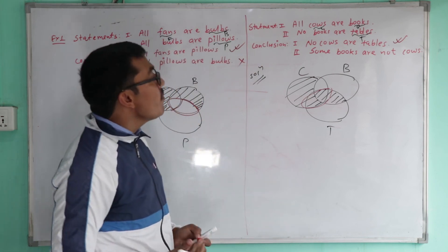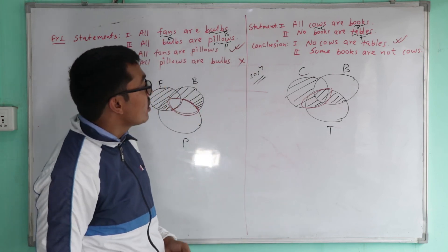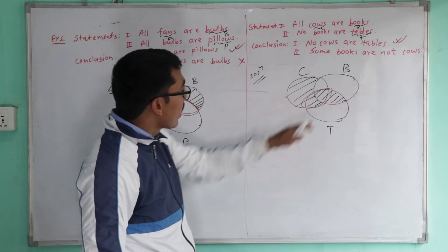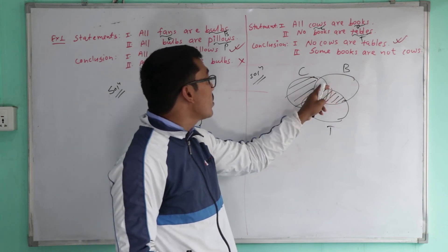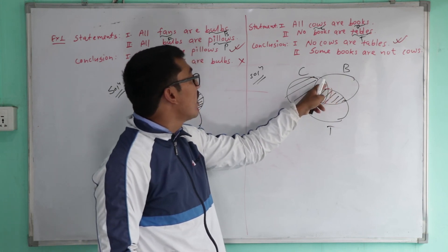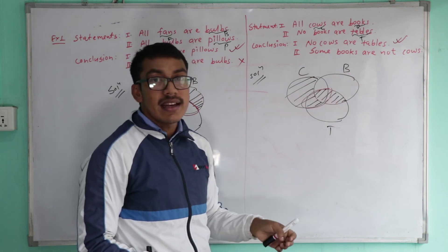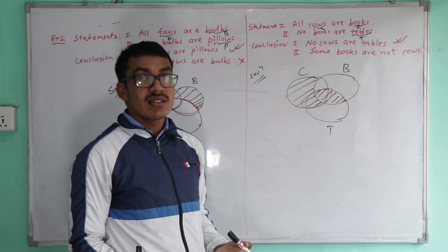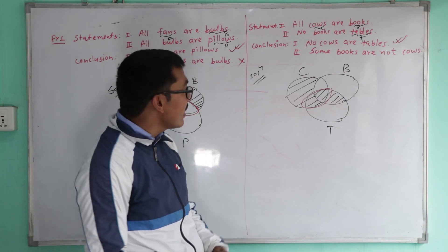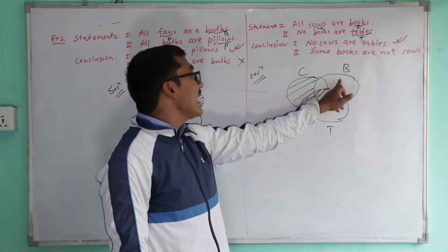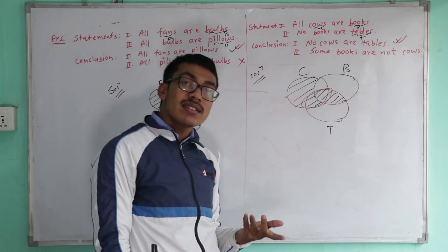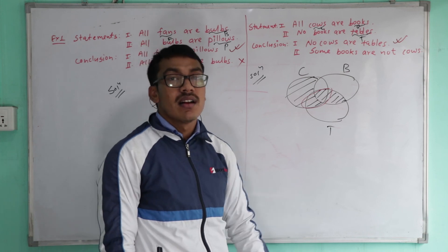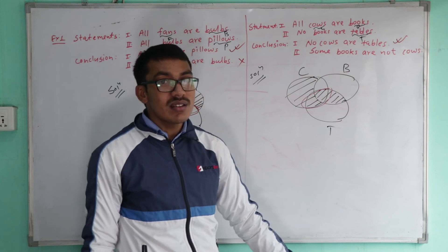And further, 'Some books are not cows' — is this 100% certain? Some books may or may not be cows. It is not 100% certain, so this cannot be taken as a definite conclusion.